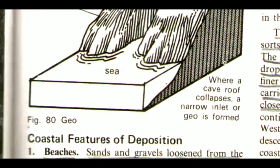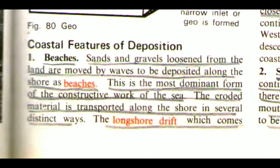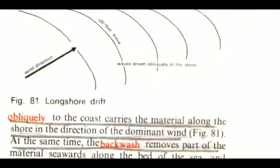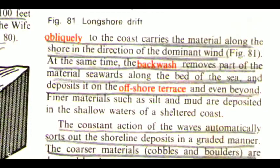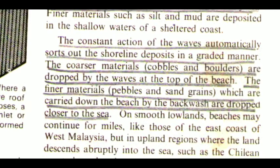Now we are going to read coastal features of deposition. The first one is beaches. Sands and gravels loosened from the land are moved by waves to be deposited along the shore as beaches. This is the most dominant form of the constructive work of the sea. The eroded material is transported along the shore in several distinct ways. The longshore drift, which comes obliquely to the coast, carries the material along the shore in the direction of the dominant wind.